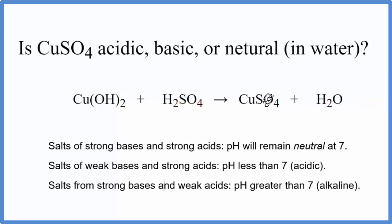To do that, we need to know the equation, the neutralization reaction, that made the copper sulfate. So to get the copper sulfate, we have copper hydroxide, that's our base, and then sulfuric acid. They react, we get copper sulfate, and then we get water.